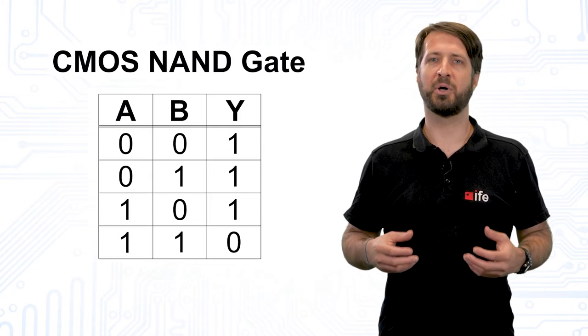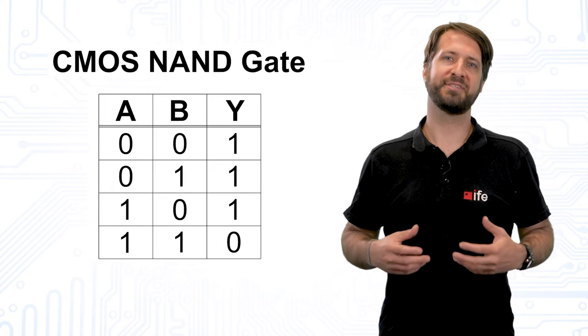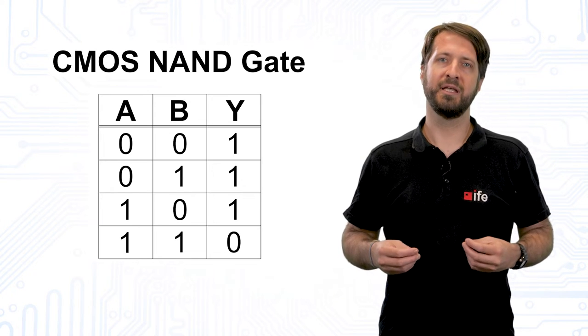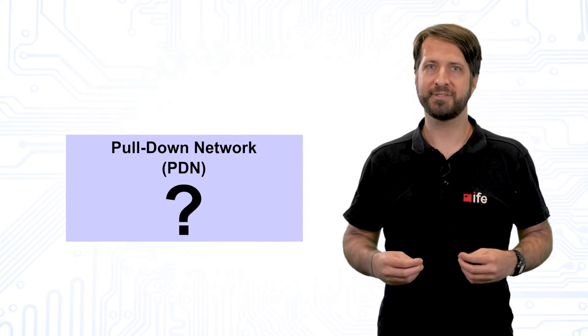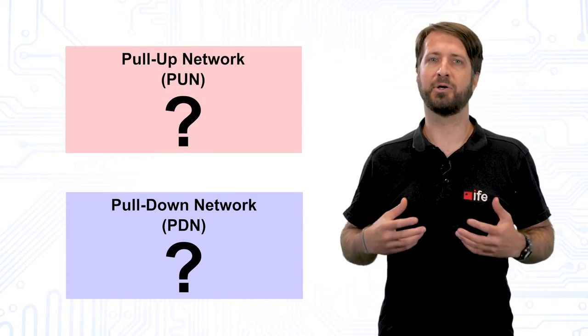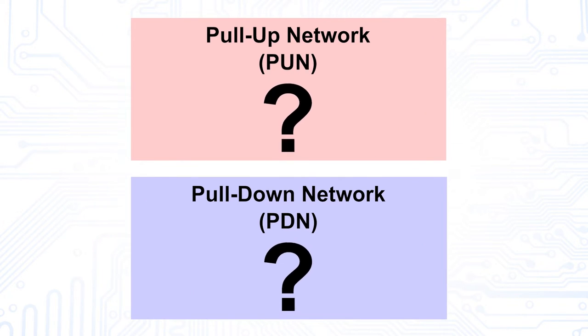In order to approach the analysis of CMOS logic circuits, we start with a simple NAND gate and its corresponding truth table. The easiest way to design a CMOS logic circuit is to derive the pull-down network from the truth table first, and then develop the corresponding pull-up network from the pull-down network. Sounds confusing? I can assure you it's not.